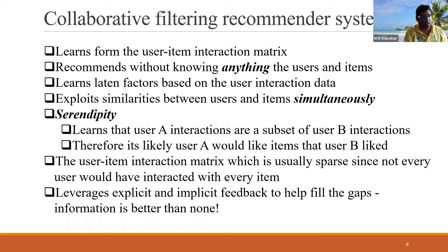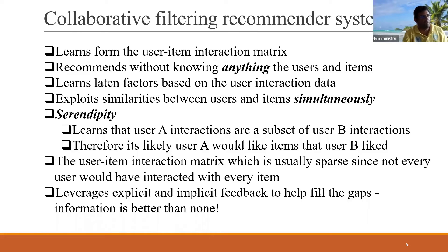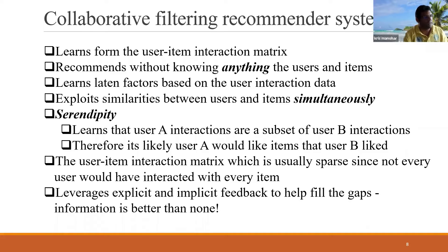We can then do user-to-user filtering — find who are all the users closest to me using cosine distance or some other metric. This is nice because it exploits similarity between users and items, not just one particular user but all of them simultaneously. This gives us the idea of serendipity, where we can look at the global information, see who are people similar to you, look at things they like that you don't, and chances are you would also like those things.